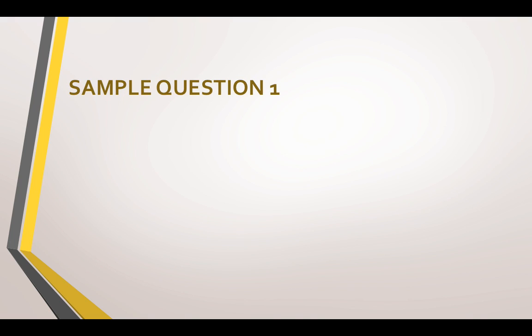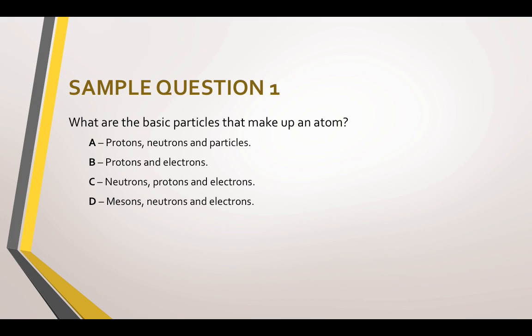Let's have a look at a few sample questions. Sample question one. What are the basic particles that make up an atom? So this is relying on your knowledge of science and physics. Your answer options are A. Protons, neutrons and particles. B. Protons and electrons. C. Neutrons, protons and electrons. Or D. Metons, neutrons and electrons. You would need to know the actual answer that you cannot guess to a question like this. So in actual fact the answer is C. You would need to know the basics in order to answer that question correctly. It is in fact neutrons, protons and electrons that make up an atom.